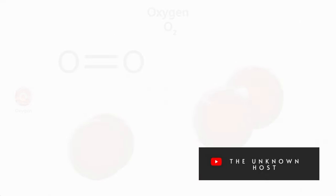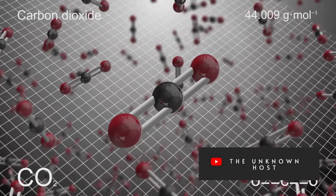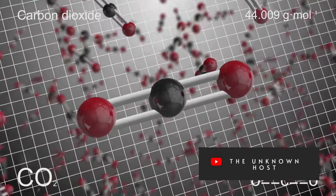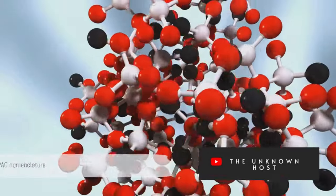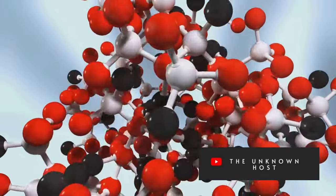Esters have a carbonyl group (C=O) where one of the oxygens is connected to an alkyl or aryl group. To name esters, let's try naming ethyl butanoate, which has an ethyl group and is derived from butanoic acid. What's its IUPAC name?